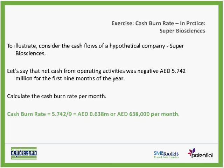Let's calculate the cash burn rate per month. We have negative $5 million over a nine-month period. So the cash burn rate is $5.7 million divided by nine, which equals $638,000 per month. This is how much cash they are spending on a monthly basis during the past nine months.